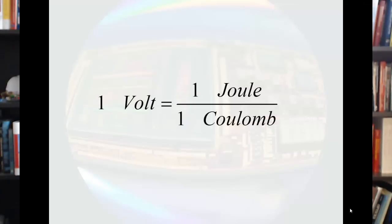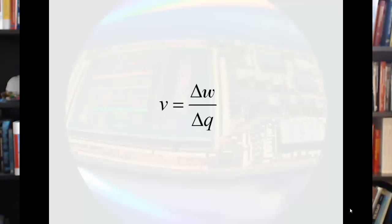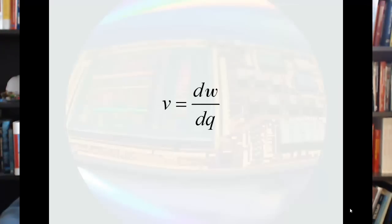We also have that the volt is equal to joules per coulomb. Expressing this a little more mathematically, we could write it that voltage is equal to the change in energy over the change in charge. Going to calculus, this says that voltage is the derivative of energy with respect to charge.